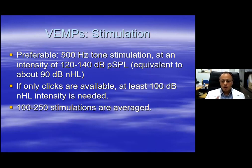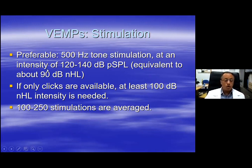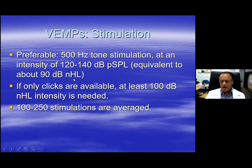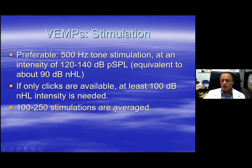The preferable stimulus is tone stimulation at 500 hertz and at 90 decibels above average hearing threshold. Some systems do not have tone stimulation — if you only perform brainstem auditory evoked potentials, you may only have clicks available. You can perform VEMPs with clicks, but you need a stronger stimulus: at least 100 to 110 decibels above average hearing threshold. You need to average 100 to 250 stimulations, although in the majority of cases 100 can be enough.